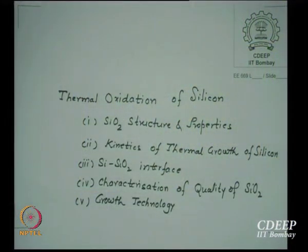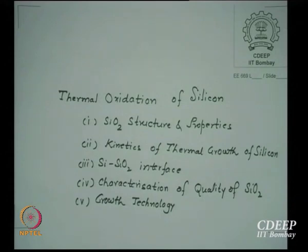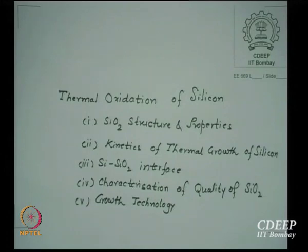We start with a new topic today: thermal oxidation of silicon. SiO2 is the most important material in VLSI technology, and since it is very important, we will study it carefully. We will look into the structure of SiO2 and its properties, and we will look into the kinetics of thermal growth of silicon, which is necessary for modeling of the oxidation process.